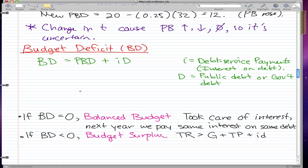We can break down BD as follows: BD equals G minus T plus ID. Essentially, we're breaking down the primary budget deficit. Breaking it down further, you get G minus TR plus TP plus ID. That's the whole formula for the budget deficit.